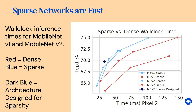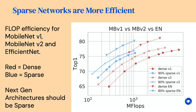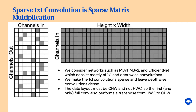We demonstrate that we can make the weights in convolutional neural networks sparse, and that this leads to networks that are crucially wall clock time faster on mobile and desktop processors, in addition to being both smaller and requiring fewer floating-point operations.